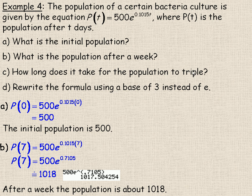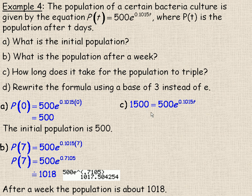In part C, you're asked: how long does it take for the population to triple? We started out with 500, so 500 tripled would be 1,500. So we put 1,500 in place of the population. If it said double instead, 500 doubled would be 1,000 and I would put 1,000 there. So 1,500 is 500 tripled — that's why I'm putting 1,500 in place of P(T), and I want to solve for time. The first thing I do is divide out this 500, so 1,500 divided by 500 is 3, leaving E to the power of 0.1015T.